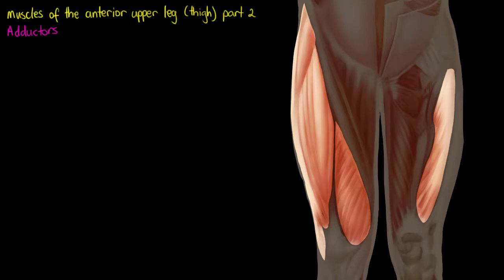The first of which is going to be our adductors. Like with our quadriceps, our adductors are not one muscle — they're a group of three, so remember that. We're going to talk about each one of them, and grouped together they are going to form the vast majority of the muscles of the medial aspect of your leg.